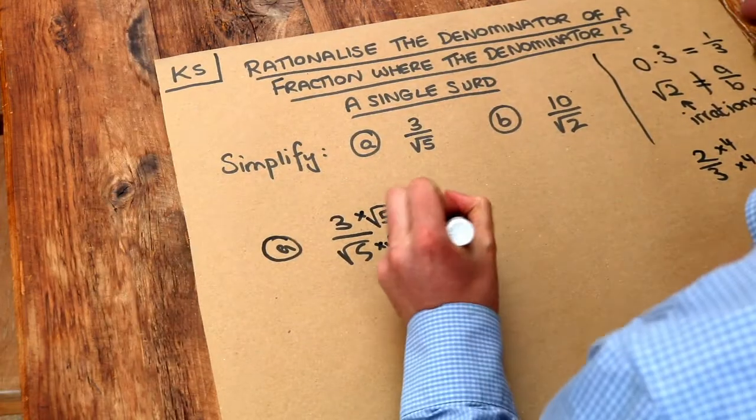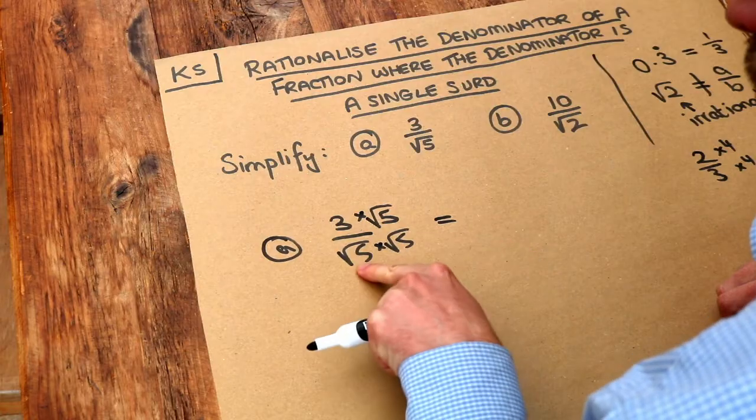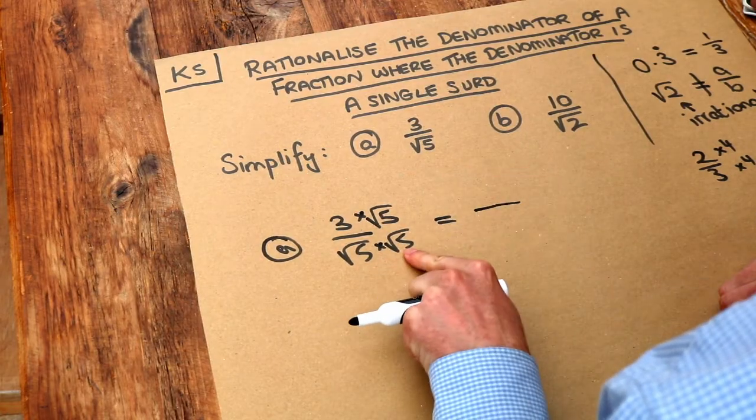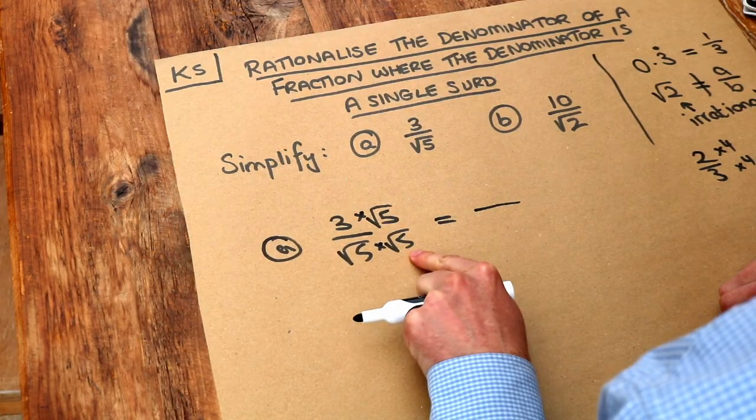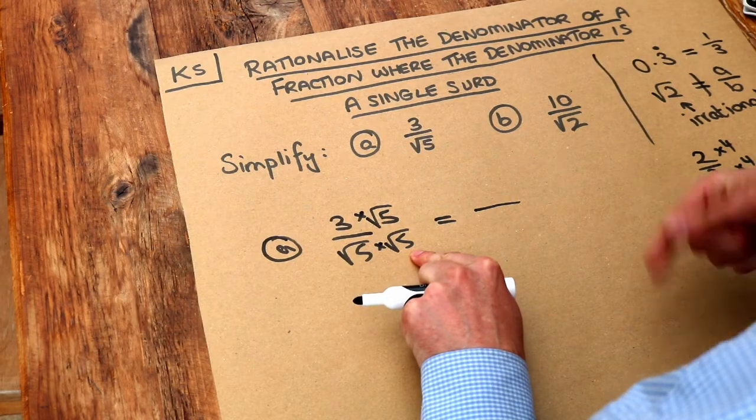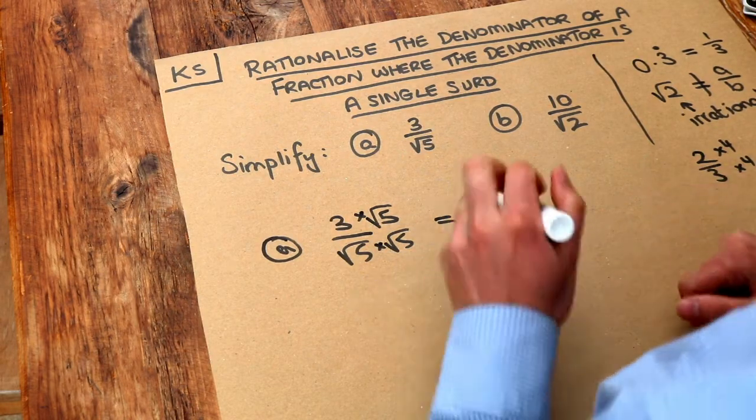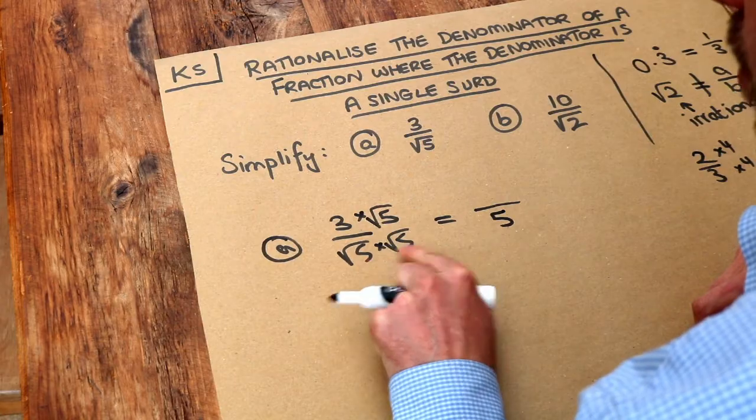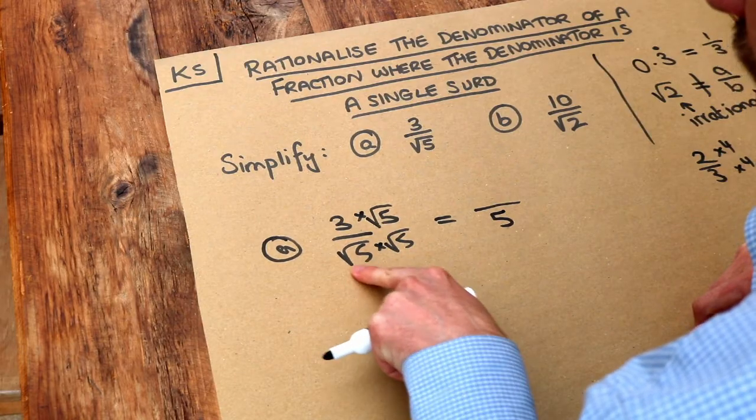Now the reason this is a good idea is because when I do root 5 times root 5 at the bottom, square root of 5 times square root of 5 is the square root of 25, and the square root of 25 is just 5. Remember, when you times a surd by itself, that gets rid of the square root.